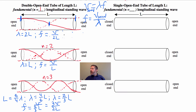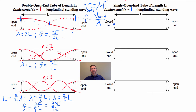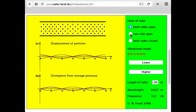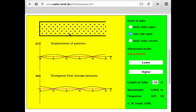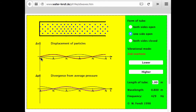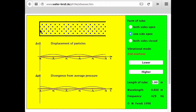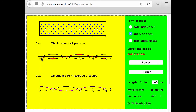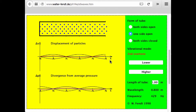The next thing we're going to do is deal with these single open-ended tubes, which have a closed end. We're going to call this lowest frequency n equals 1. It's different than before because this is a closed end — there must be a displacement node at the closed end, because the air molecules slam against it and can't move. At the open end, we always have a displacement anti-node.